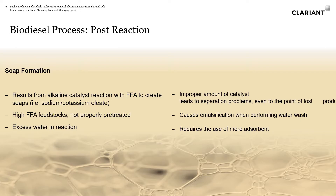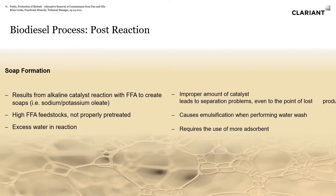Soap formation results from the alkaline catalyst reacting with free fatty acid — for example, oleic acid would form sodium oleate. This can come from high FFA feedstocks, excess water in the reaction, or an improper amount of catalyst. You want to keep the reaction as dry as possible because you can get direct saponification of the triglycerides if you have enough water in the system. That can cause emulsion problems when you go to separate the glycerin from the methyl esters. The more soap you have, the more adsorbent you're going to need.